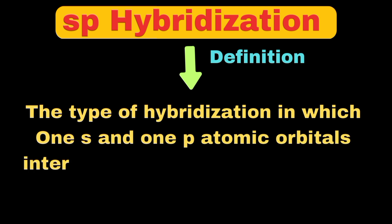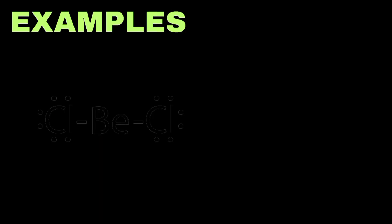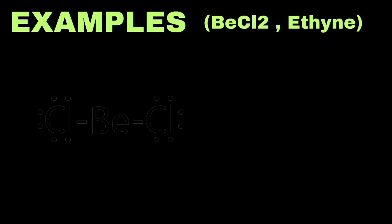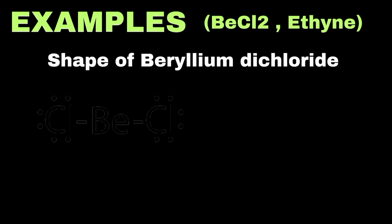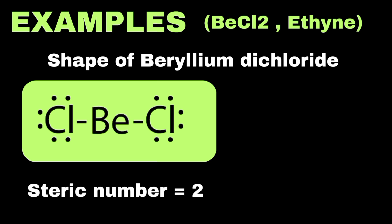Now let's move towards sp hybridization. It is defined as the type of hybridization in which 1s and 1p atomic orbital intermix to form two sp hybridized orbitals. The steric number will be two. Common examples of molecules having sp hybridization are beryllium dichloride and ethyne. Since beryllium makes two single bonds with chlorine, its steric number is two, confirming sp hybridization.